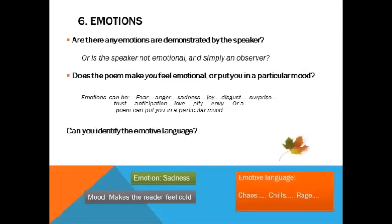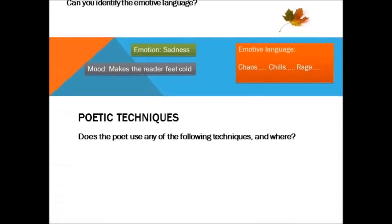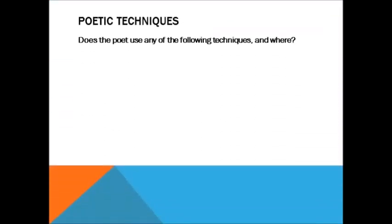See the examples from the poem, Autumn, at the bottom of the slide. Number seven. In the poem, does the poet use any of the following techniques and where?